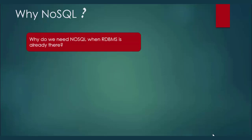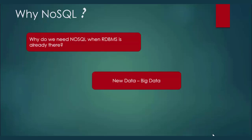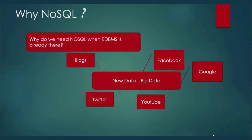The answer is: with the increase in internet, companies like Google, Amazon, Yahoo, and eBay started getting huge amounts of data with growing internet traffic and activities over social media and other websites, which gave birth to a new kind of data called Big Data, which is unstructured, sometimes semi-structured, and also unpredictable in nature. Examples of sources of this kind of data are Facebook, Google, blogs, Twitter, and YouTube.